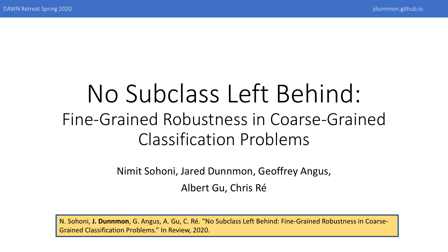As follow-up to this first study, we were particularly excited about the prospect of developing methods that could automatically measure and mitigate hidden stratification. I'll spend the remainder of the talk discussing an approach we have recently proposed that combines unsupervised learning, representation learning, and robust optimization to accomplish this goal.